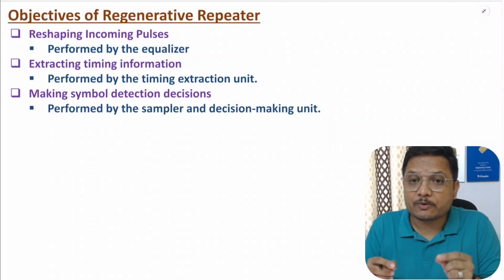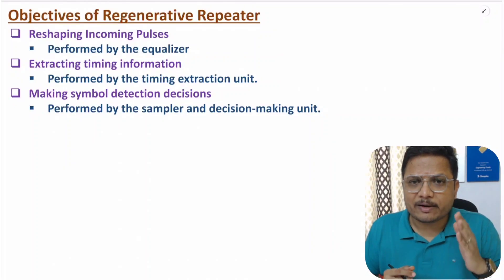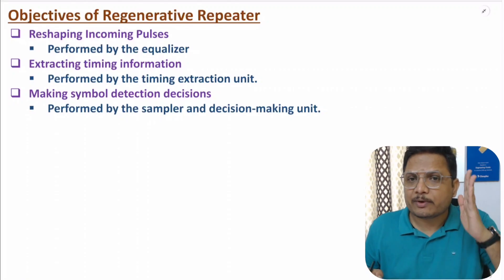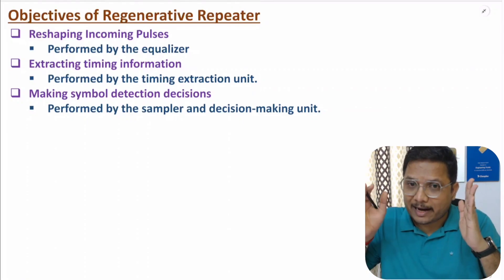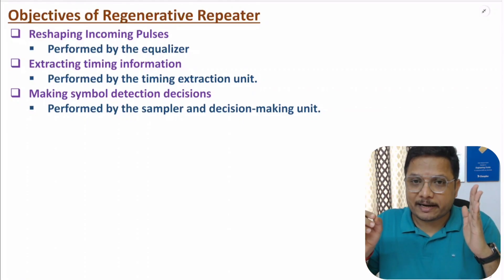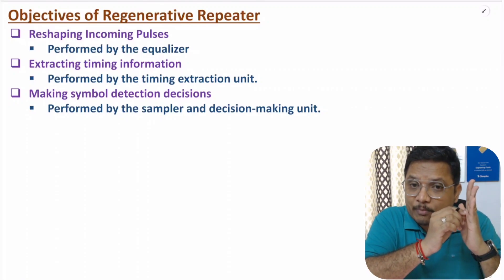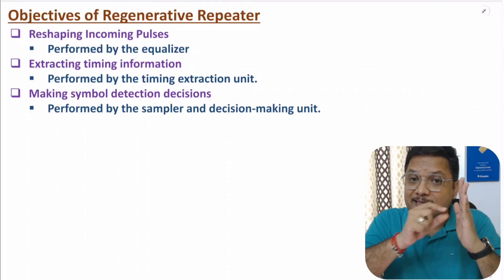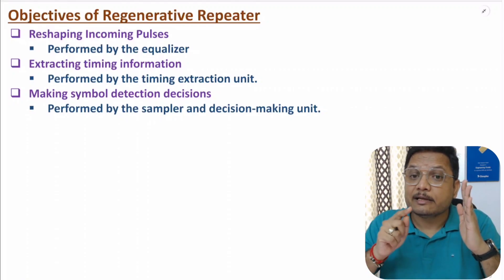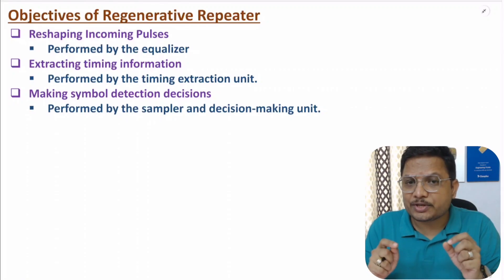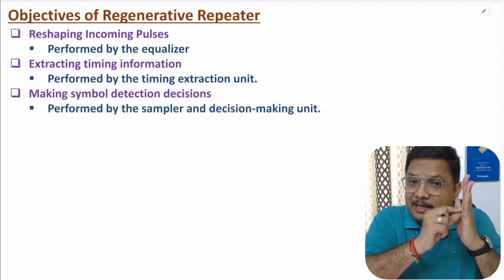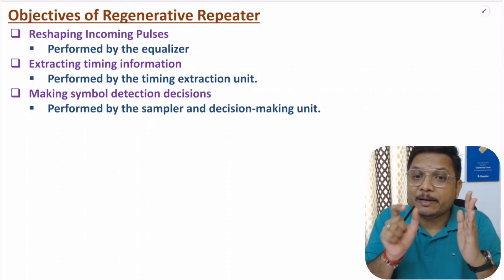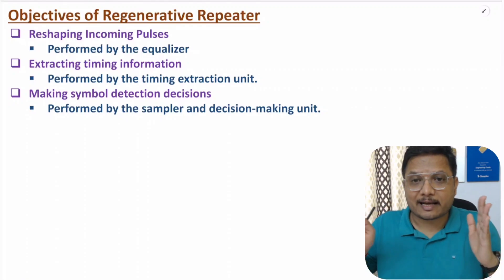First of all, you need to understand why we should use a regenerative repeater. Regenerative repeater is used to extend transmission range. For example, if you transmit a signal from one end to the other end, that range is limited. The reason is as the signal propagates through the medium, two issues get added with the signal: one is attenuation of signal, and second is noise getting added with the signal. So due to attenuation and noise, you cannot transmit a signal over a long distance. To achieve long distance transmission, if you use a regenerative repeater in between, then you can extend the transmission range.